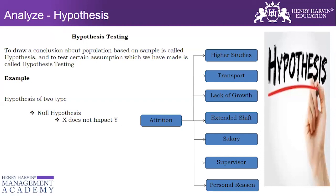The first type of hypothesis is the null hypothesis, which states that X does not impact Y. For example, if Y is attrition and X is higher studies, and the hypothesis test result is a null hypothesis, it means that higher studies does not have a significant impact on attrition. That is called the null hypothesis.